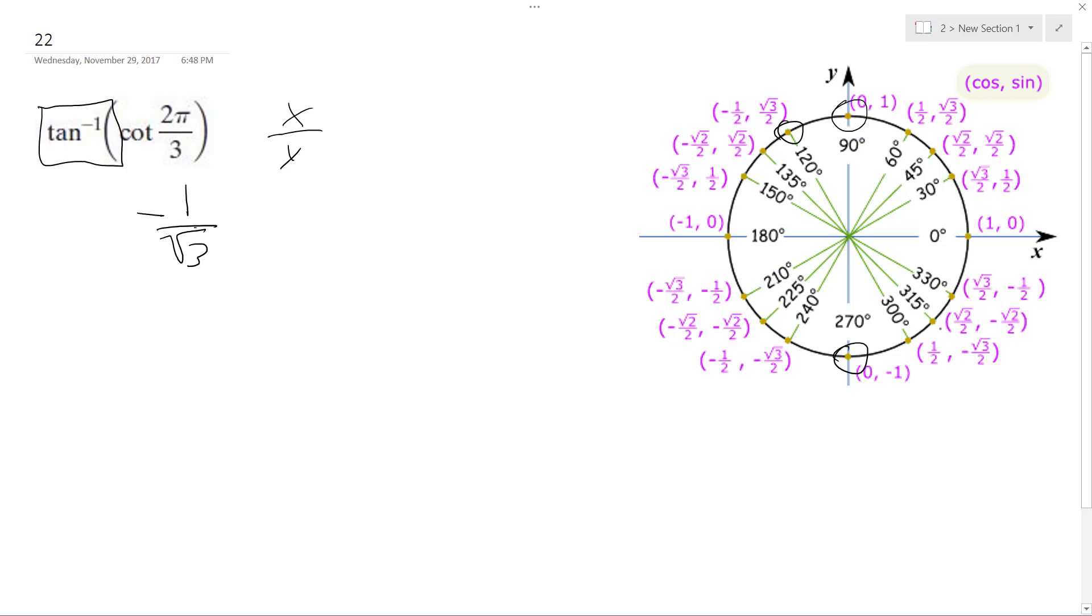And for those bounds, tangent is only negative in quadrant 4. So this is y and then this is going to be x. So x is going to be root 3 and y is going to be equal to negative 1.